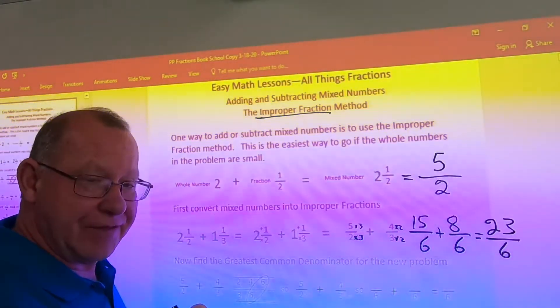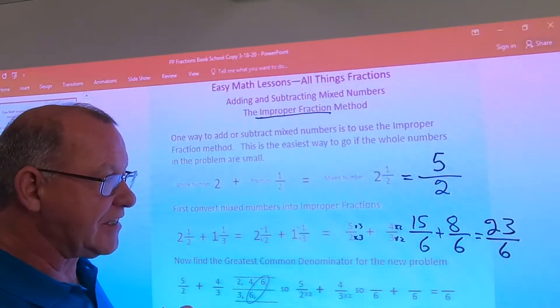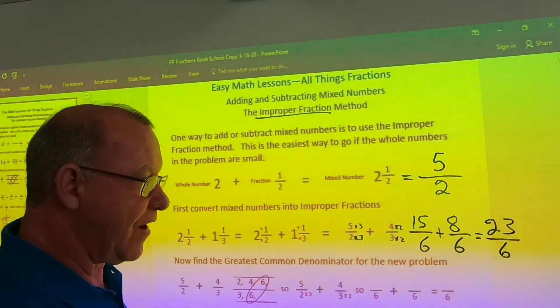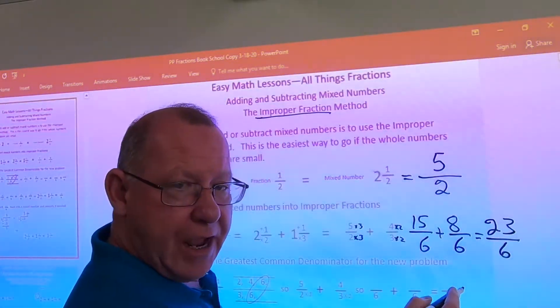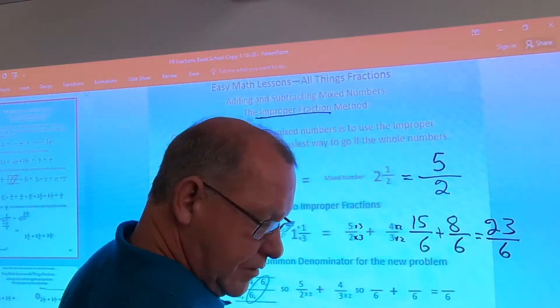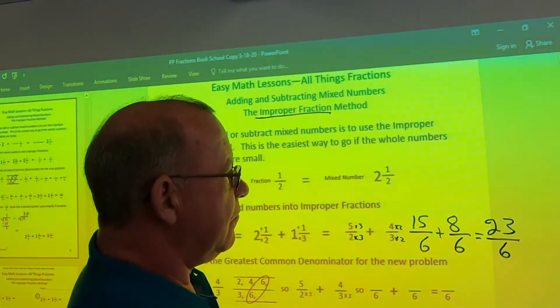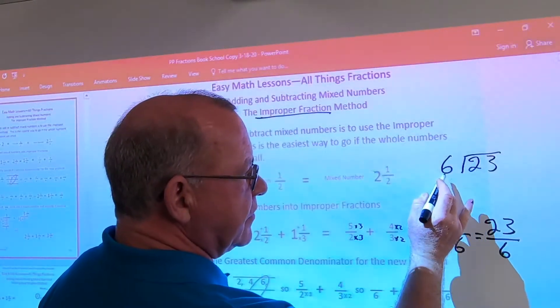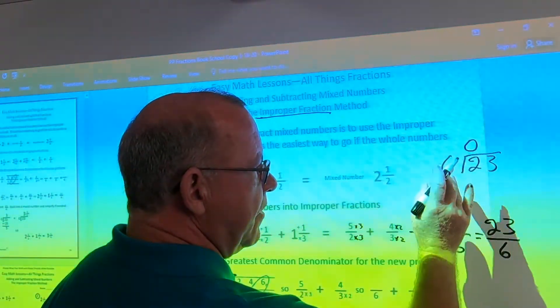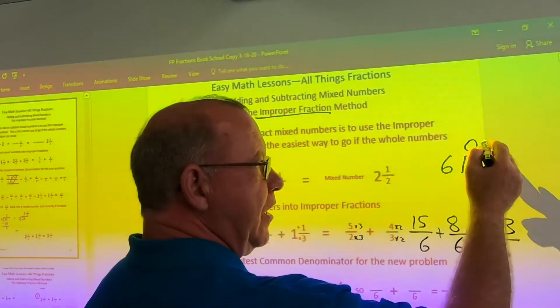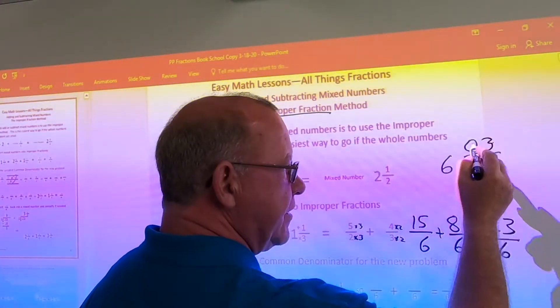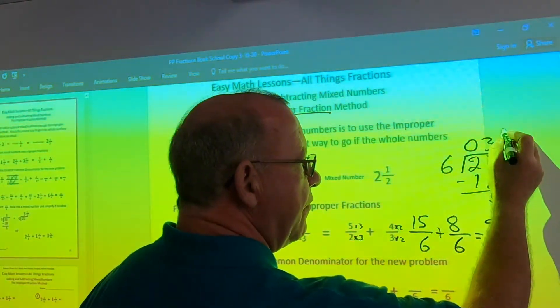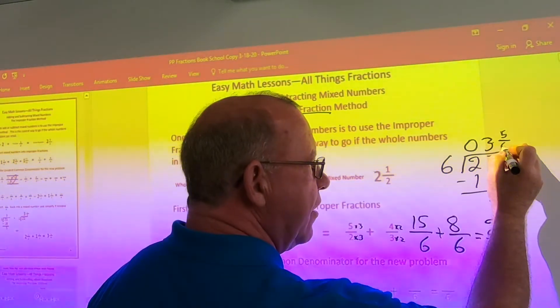Hopefully I get to leave it that way, but if not, we may have to change that into a back into a mixed number because it's an improper fraction. So, we would set up our cowboy horse. Write in our 23, divided by our six. Six will not divide into two and put a zero above it. Six will divide into 23, three times. Three times six is 18. 23 minus 18 is five.